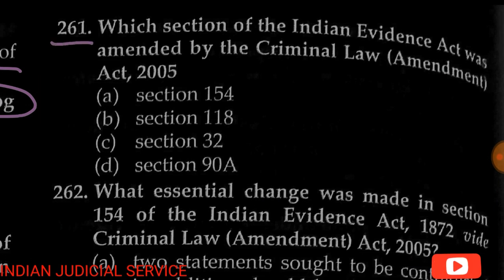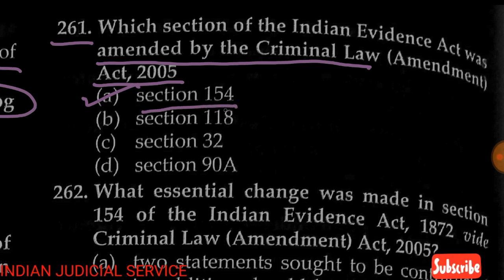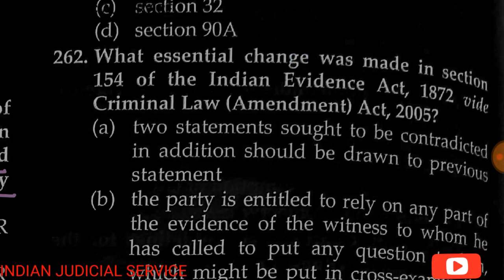Question number 261: Which section of the Indian Evidence Act was amended by the Criminal Law Amendment Act 2005? Options are Section 154, Section 118, Section 32, and Section 90A. The answer is option A — Section 154 of the Evidence Act was amended in subsection 1 in 2005.